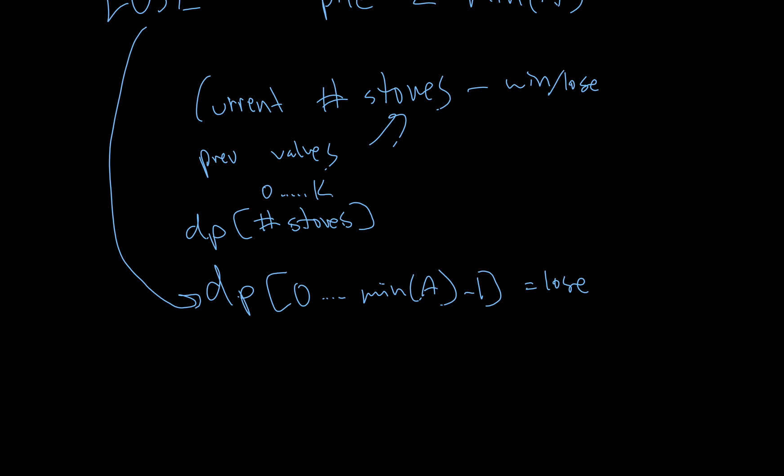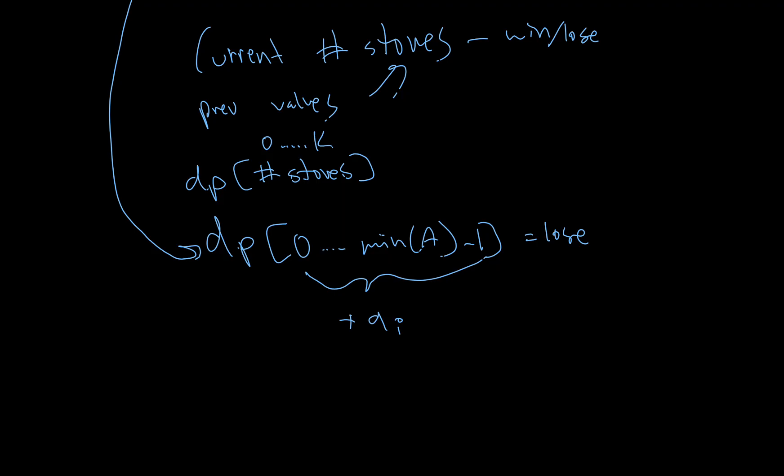So, that means the easiest way to win is anything from the range here plus any value A_i. Anything in the set A_i means that you will win. So, for example, for this one that we had here, where you had 2 and 3, that was A, and K, which is the initial number of stones, is 4. DP 0 was a lose, DP 1 was a lose.